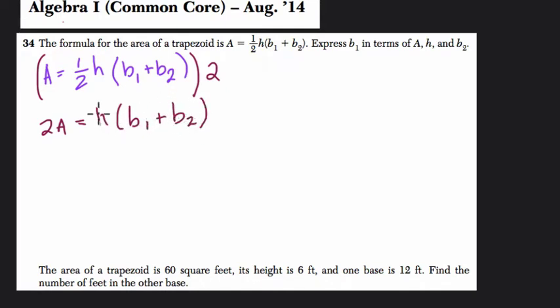And now it's a little bit less intimidating. So here I'm going to divide both sides by H. That gets me 2A over H equals, well, these H's cancel out, B1 plus B2. I don't need these parentheses anymore, it's just addition.